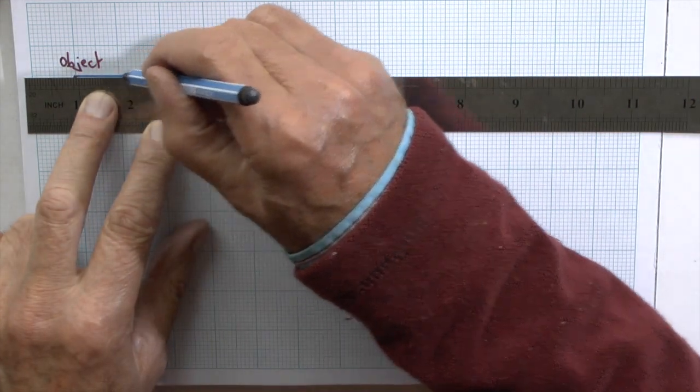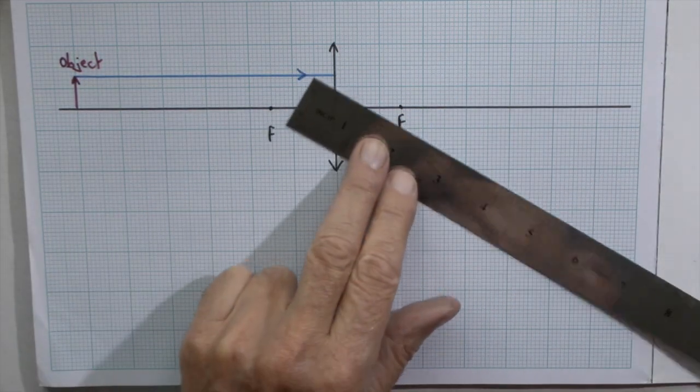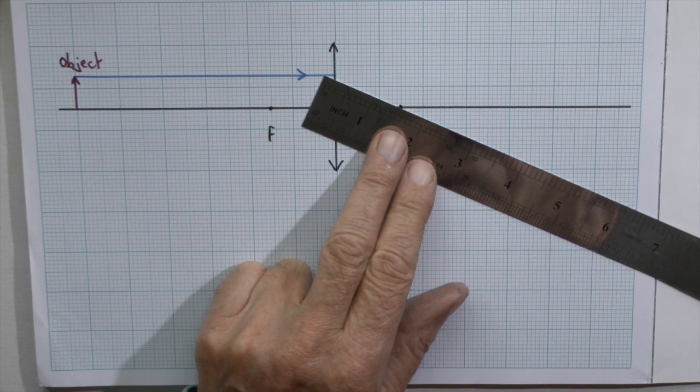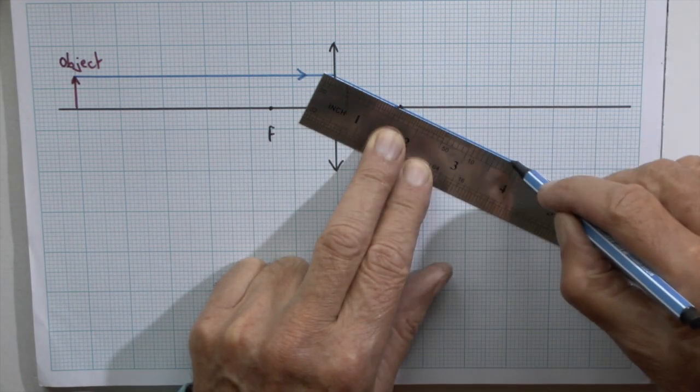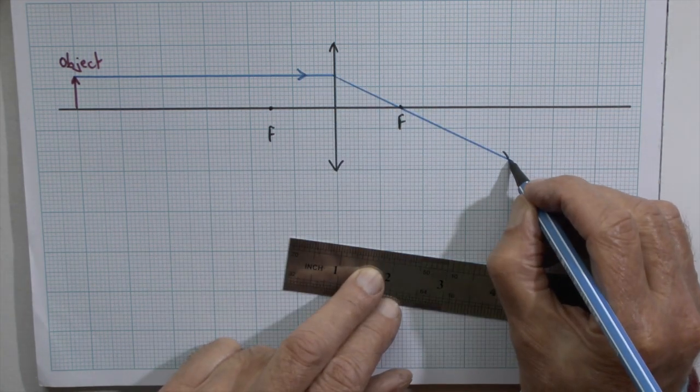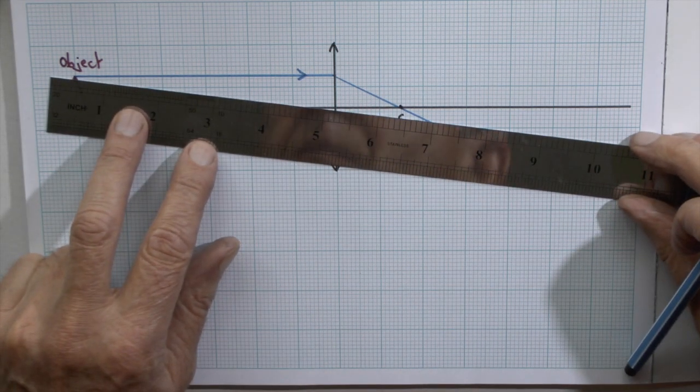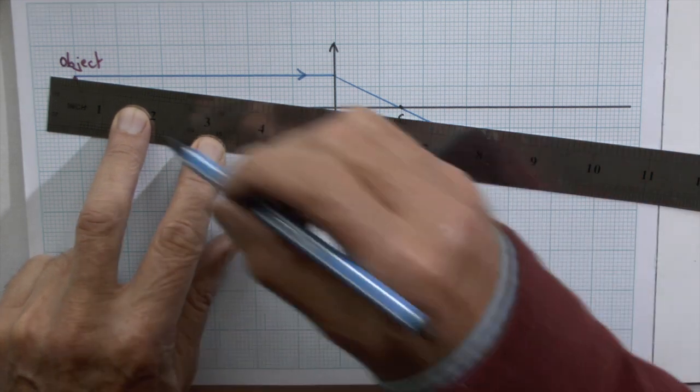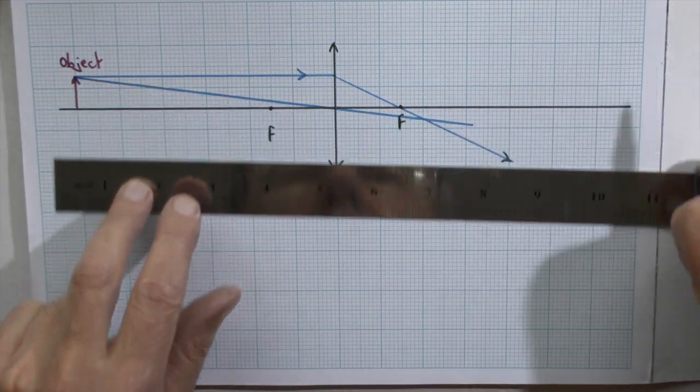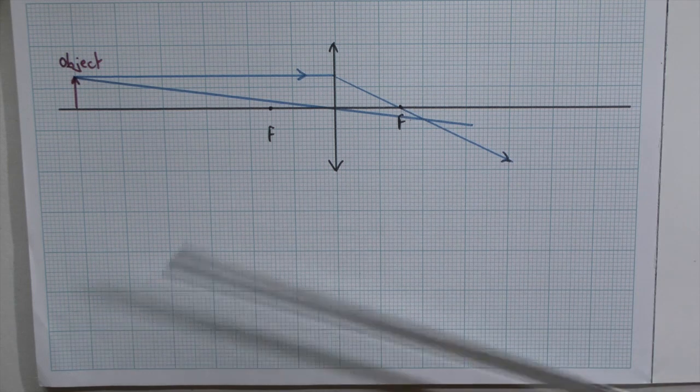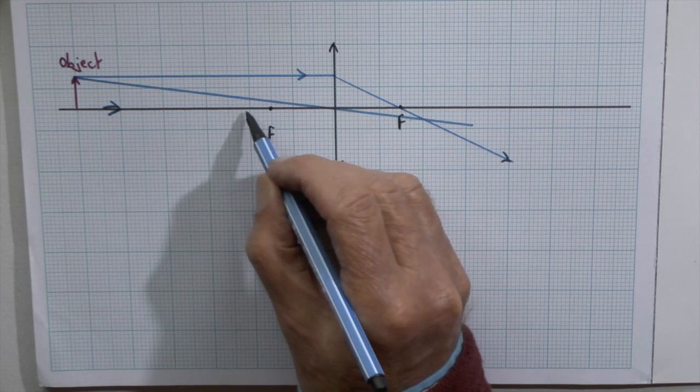A ray of light from the top of the object, because rays of light will spread in all directions, but a ray of light from the top of the object going along the principal axis, parallel to the principal axis, will be refracted through the focal point as we've seen in the previous demonstrations. A ray of light going from the top of the object through the centre of the lens will not be refracted. It will go straight through. Again, we have seen that on a real lens.